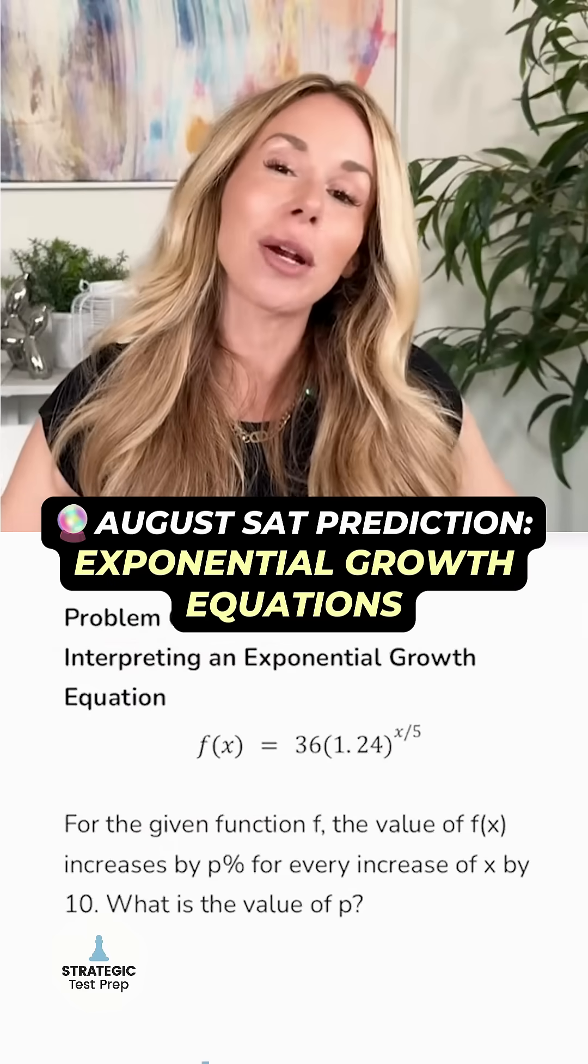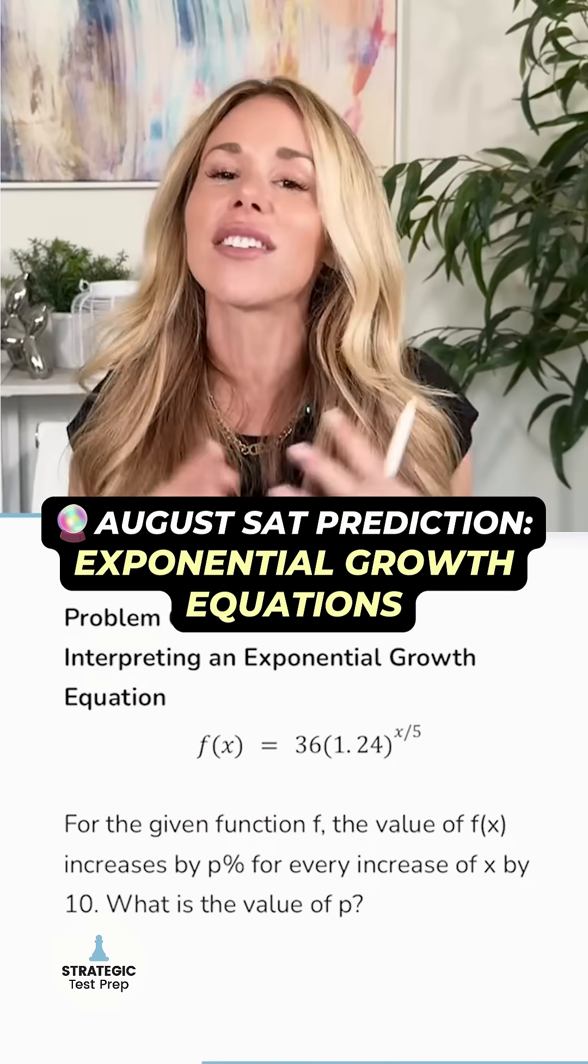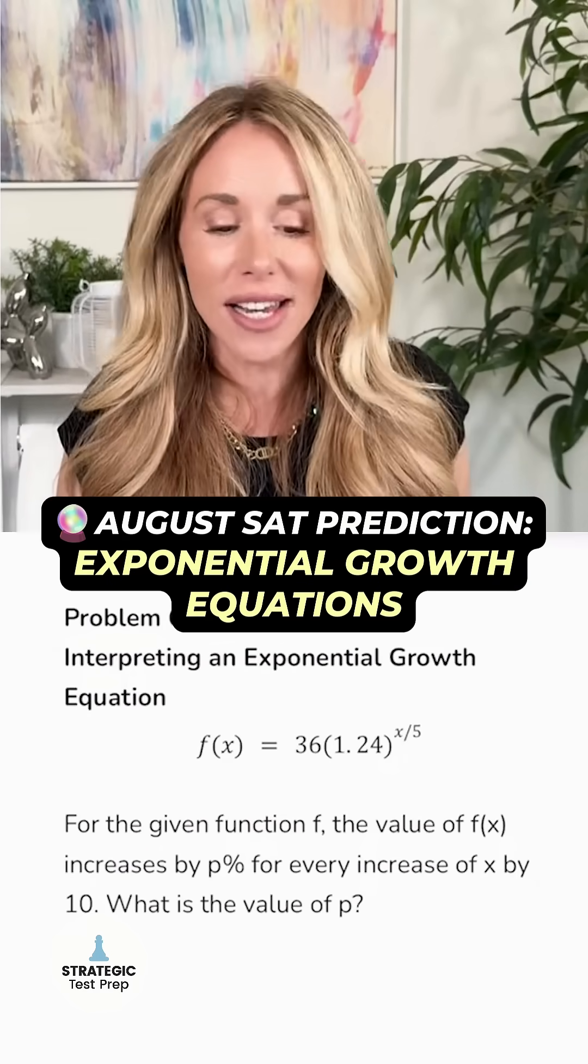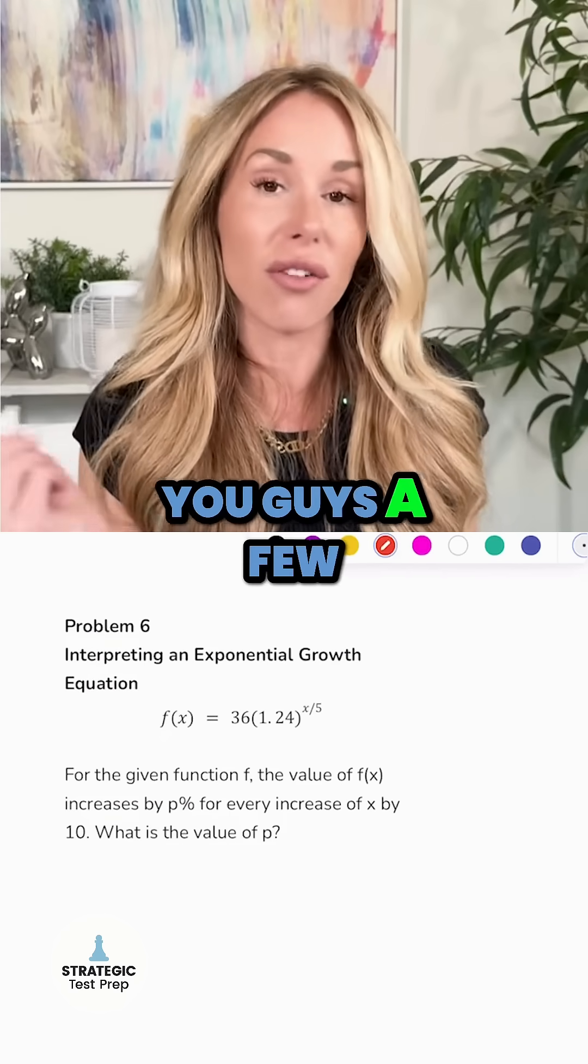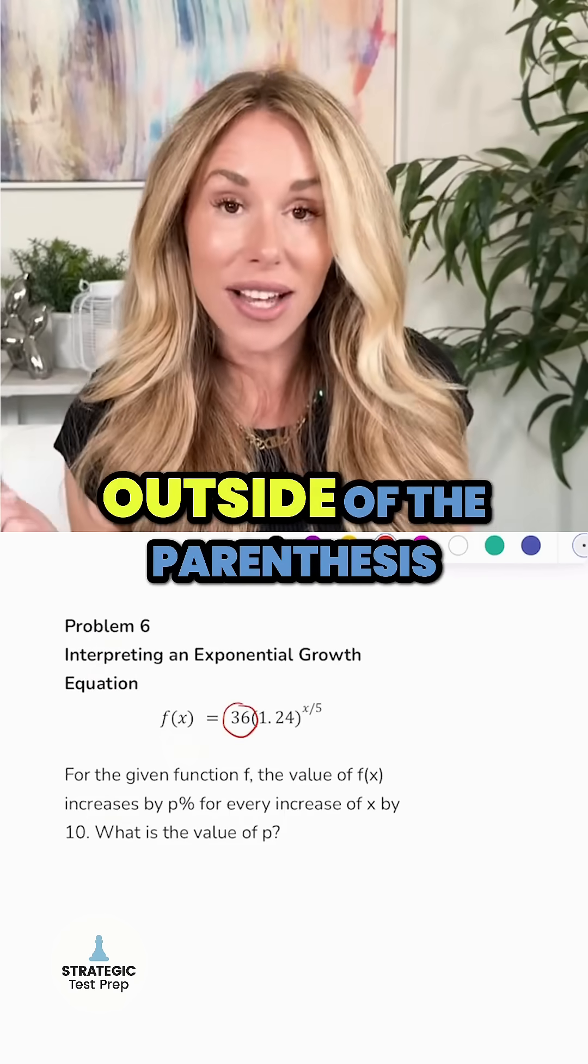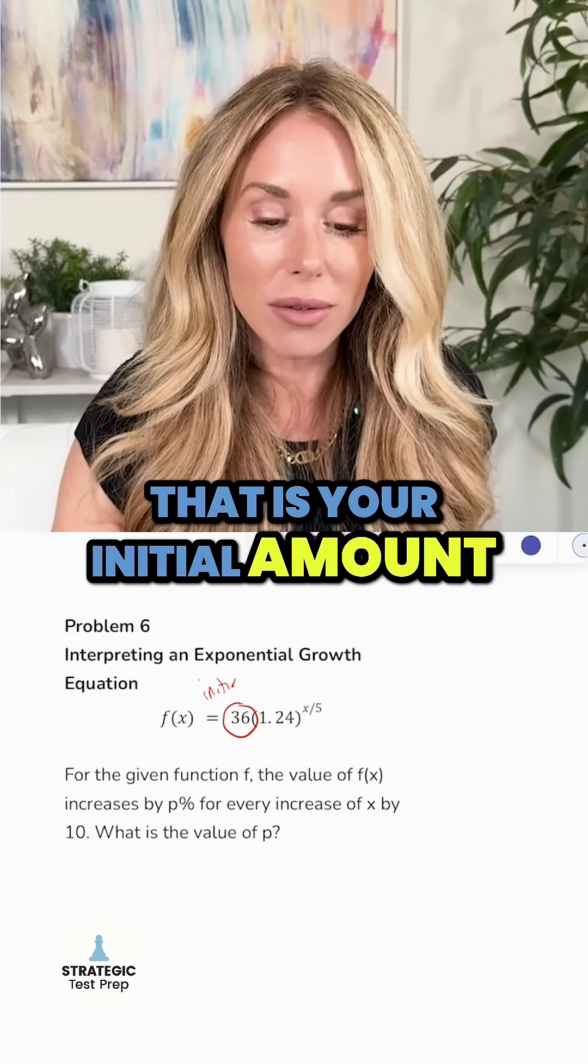My sixth prediction deals with interpreting an exponential growth equation. These things are super popular on the SAT. This one might look a little fancy but it's really not that bad. So let me run you through a few things you need to know. The number on the outside of the parentheses, that is your initial amount.